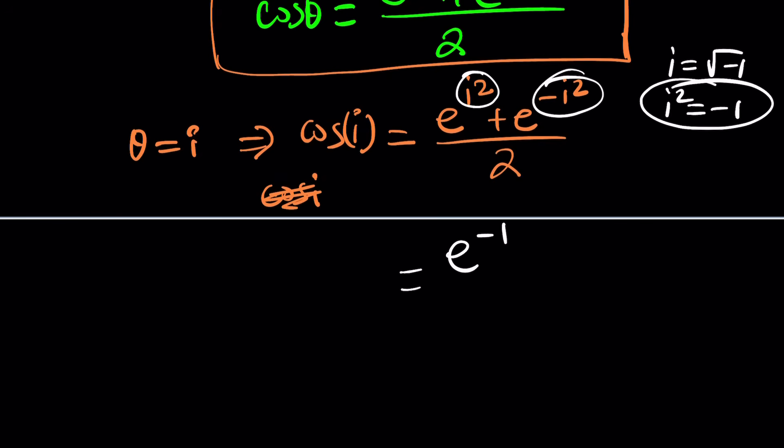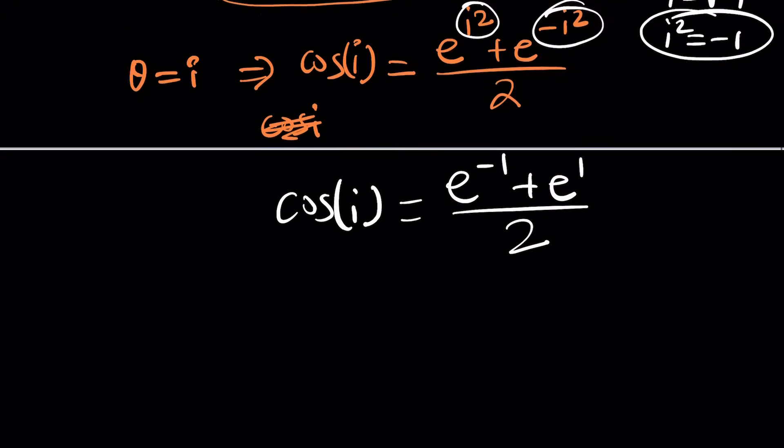Now we can replace i² with negative 1, and that'll be e to the power negative 1. But negative i² is going to be a positive 1, something that you should always remember and divide by 2. And guess what? This is equal to cosine of i. But let's simplify this a little bit, shall we? Yes.